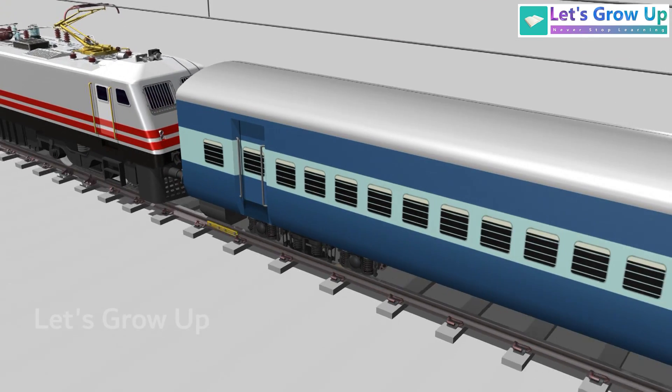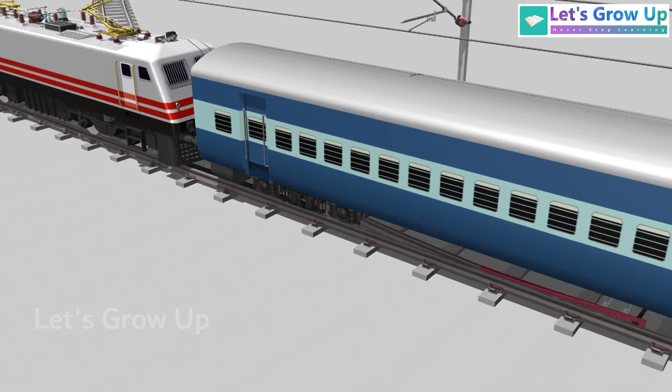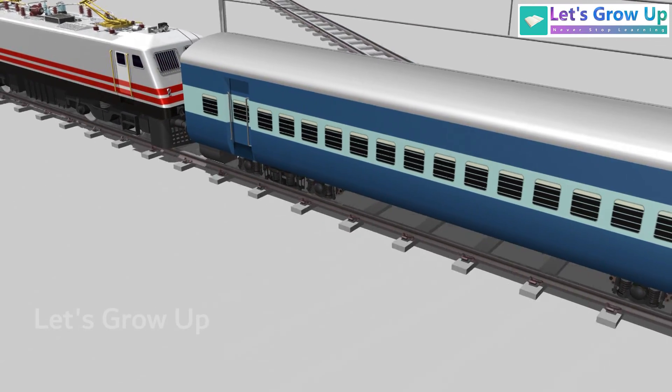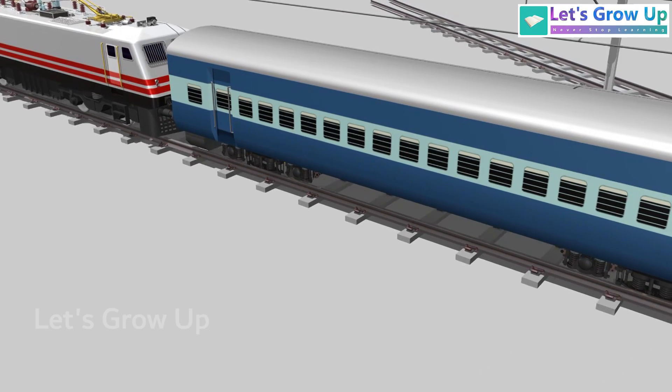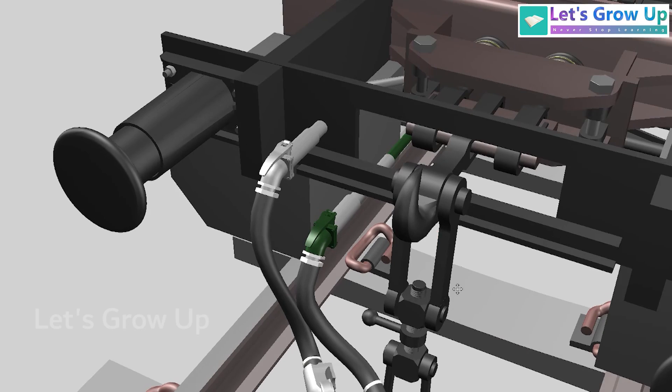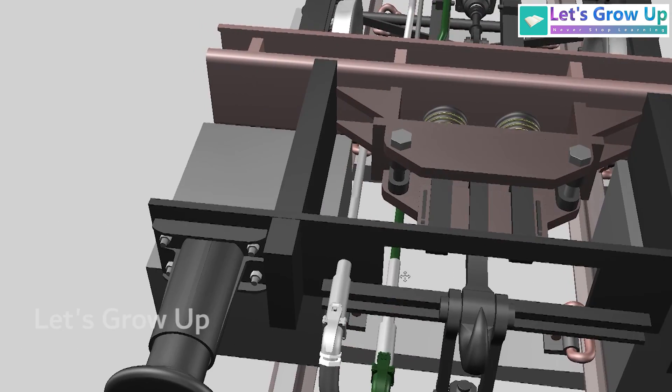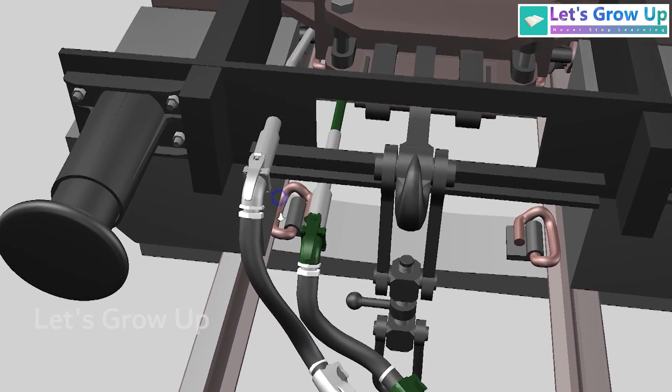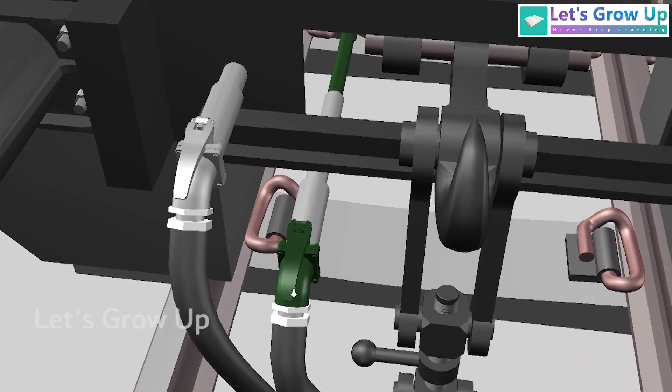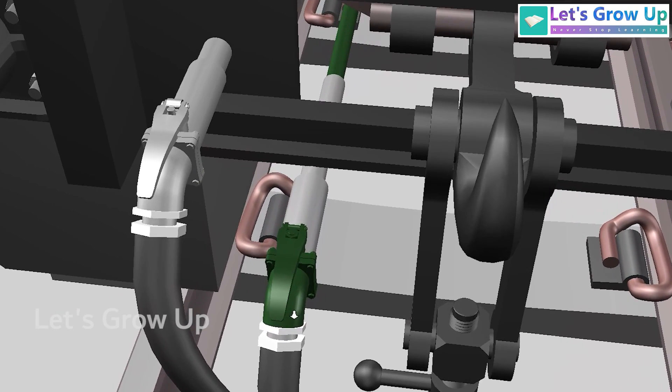This coach is commonly known as ICF, which is Integral Coach Factory. In a single pipe brake system, only the brake pipe BP is visible. However, in a twin pipe brake system, you will see both BP and FP running alongside each other.